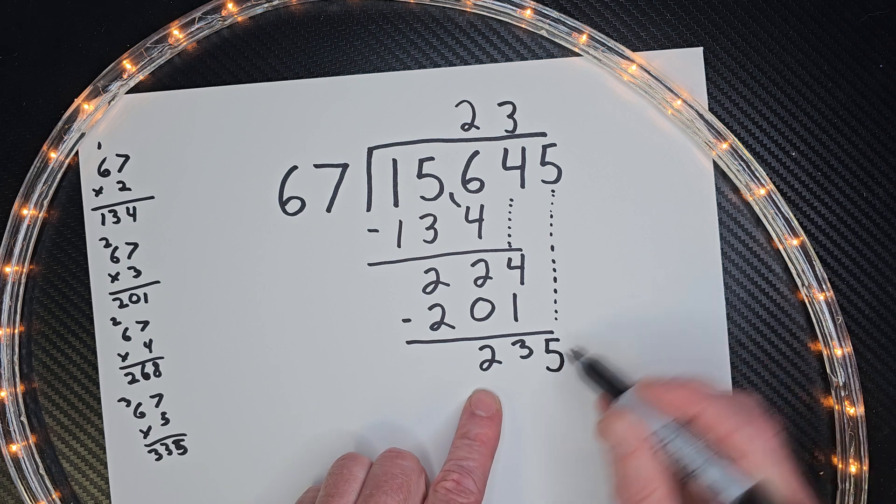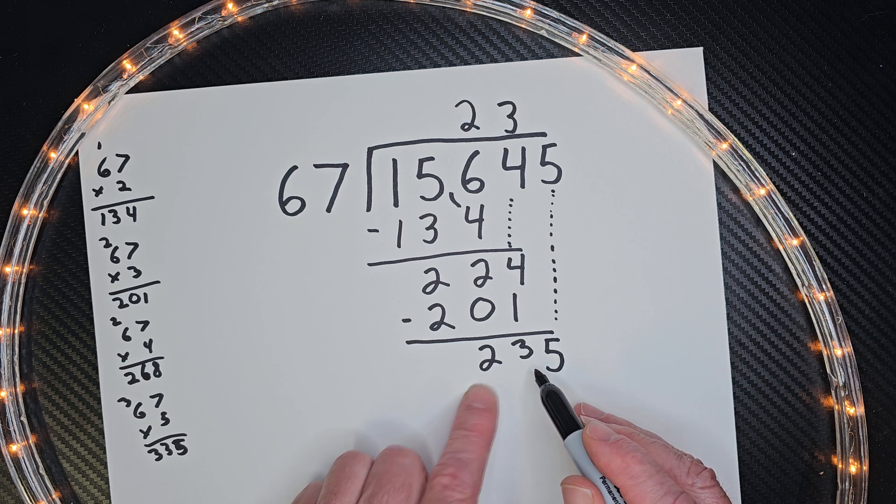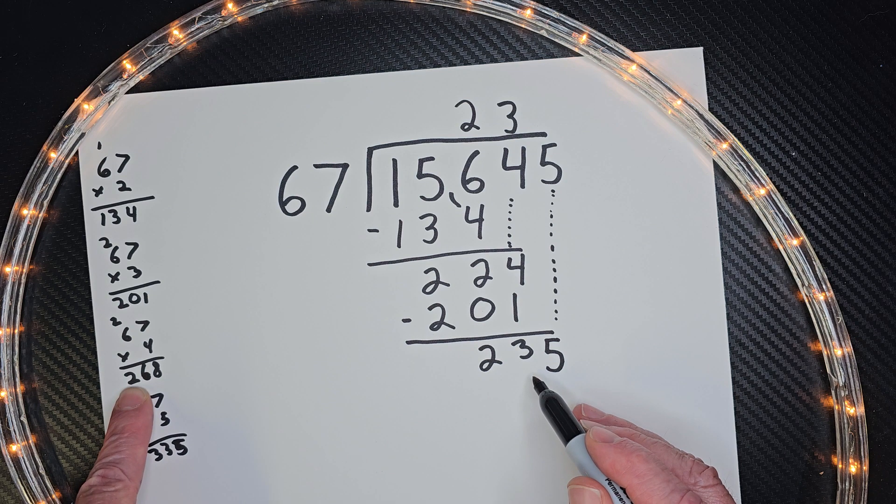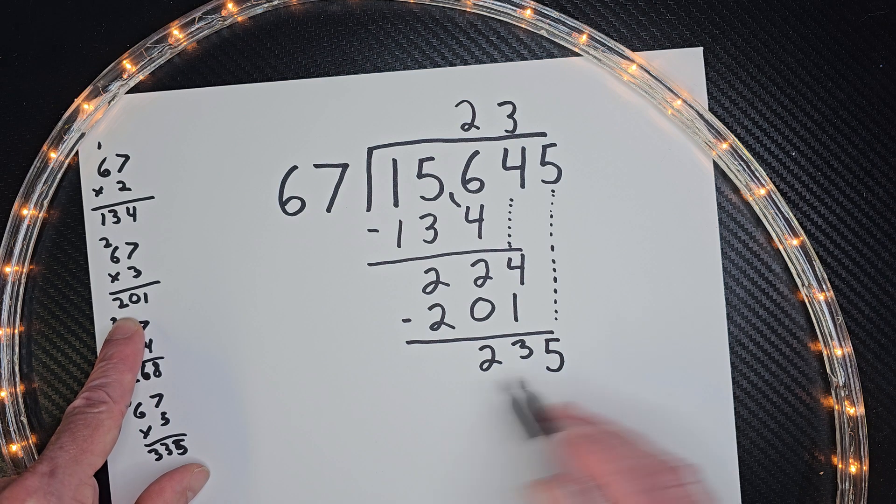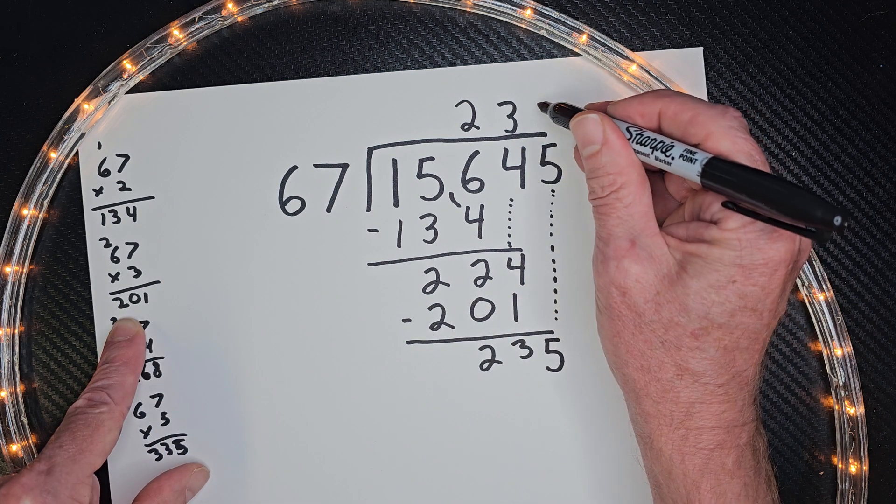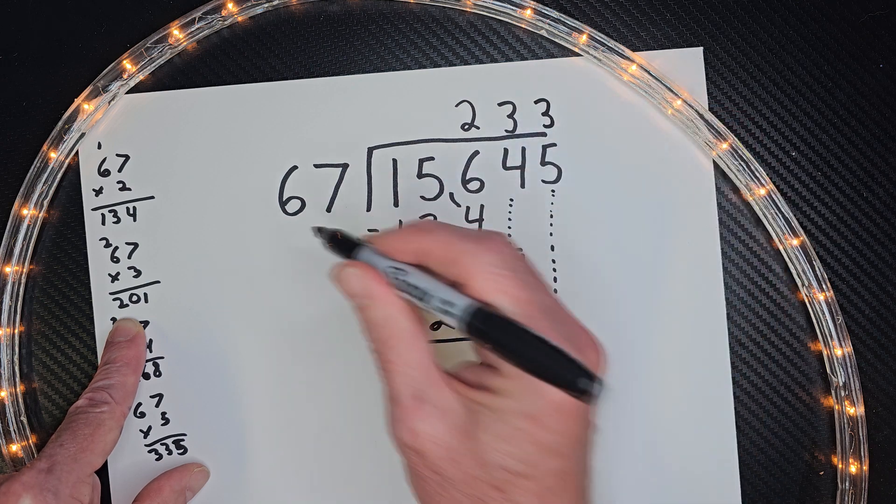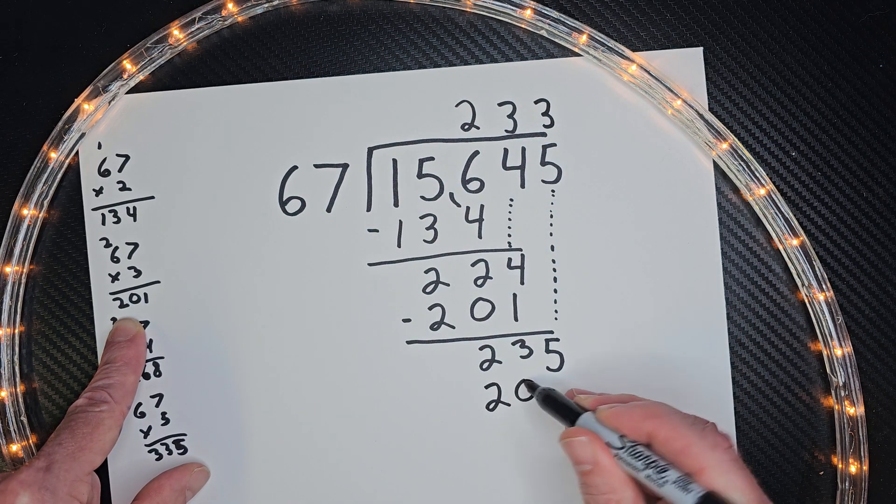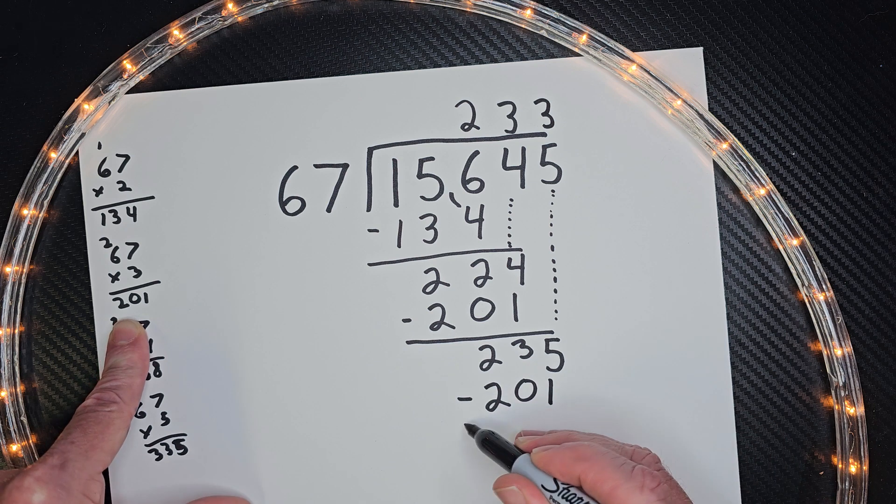All right. Got to make math fun. So what number would that be? 268 is still too high. We still need to work with the number 3. So I put 3 times 67 is 201. Right there. Subtract it.